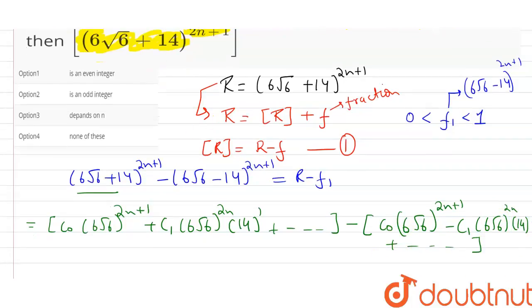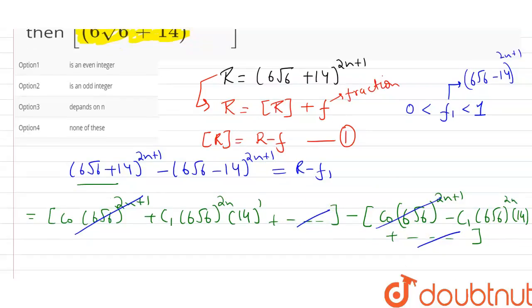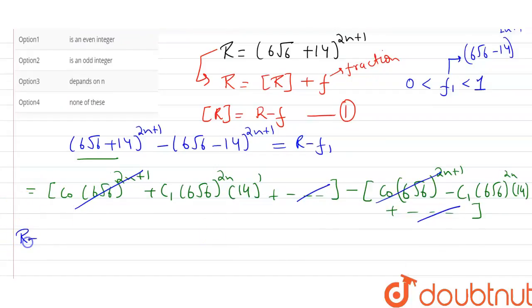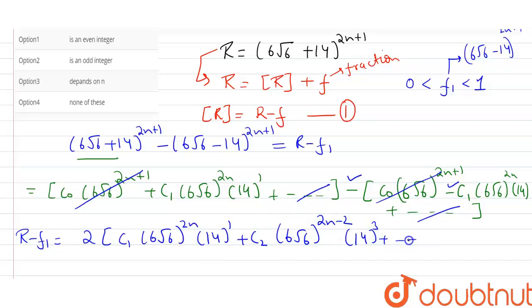From here, this term will be cancelled by this term as there is a minus sign. So we are left with R - f₁ equal to 2 times [C₁(6√6)^(2n)(14) + C₃(6√6)^(2n-2)(14³) + ...] because the minus terms become plus.